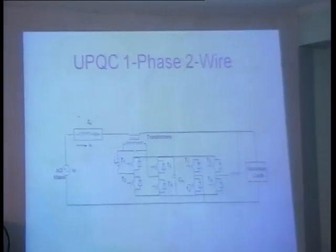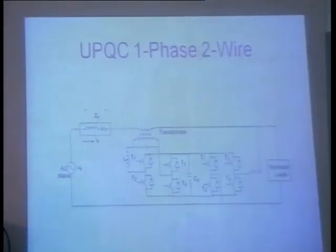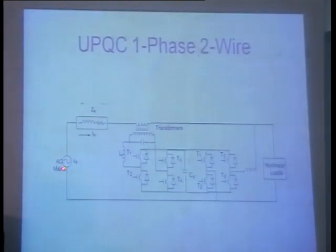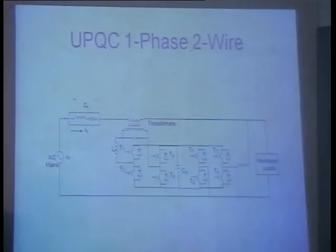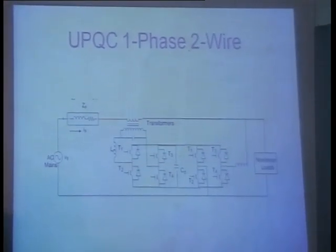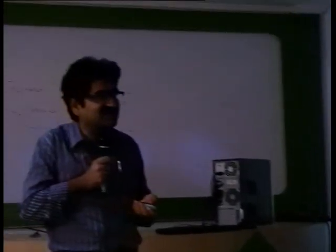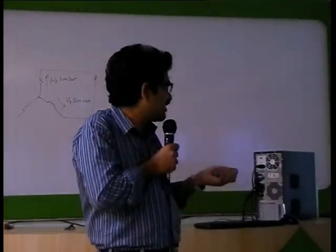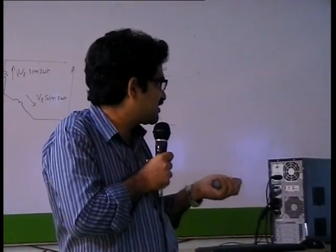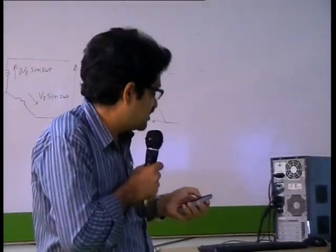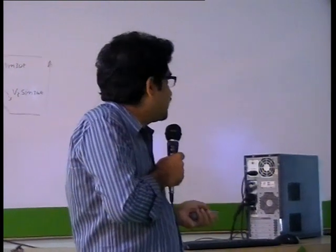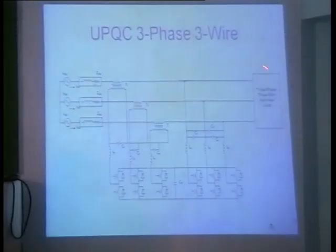Harmonics are associated with some energy, and that energy has to be supplied — you do not want the generator to supply it. Somebody else will supply it: a solar source, or wind generation, or similar renewable sources. That will charge this capacitor. This is the three-phase version of UPQC — this part is the three-phase DVR and this is the three-phase active filter.